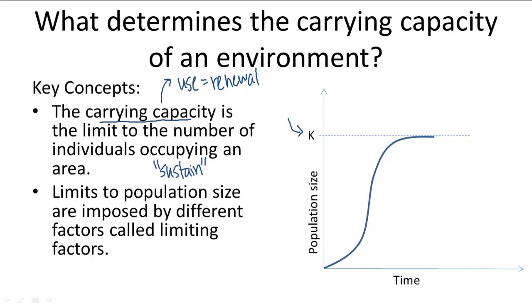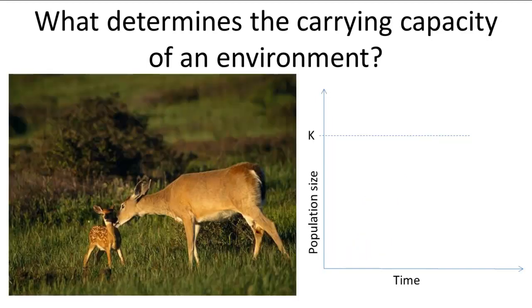Here's a basic example of how the carrying capacity might change. A population of deer is happily living in an area with plenty of resources. To oversimplify, let's say that all they need is grass, and they have a lot of it. So this population grows exponentially — it starts slow, but then there's a lot of grass, and they rapidly reproduce, and it shoots up.